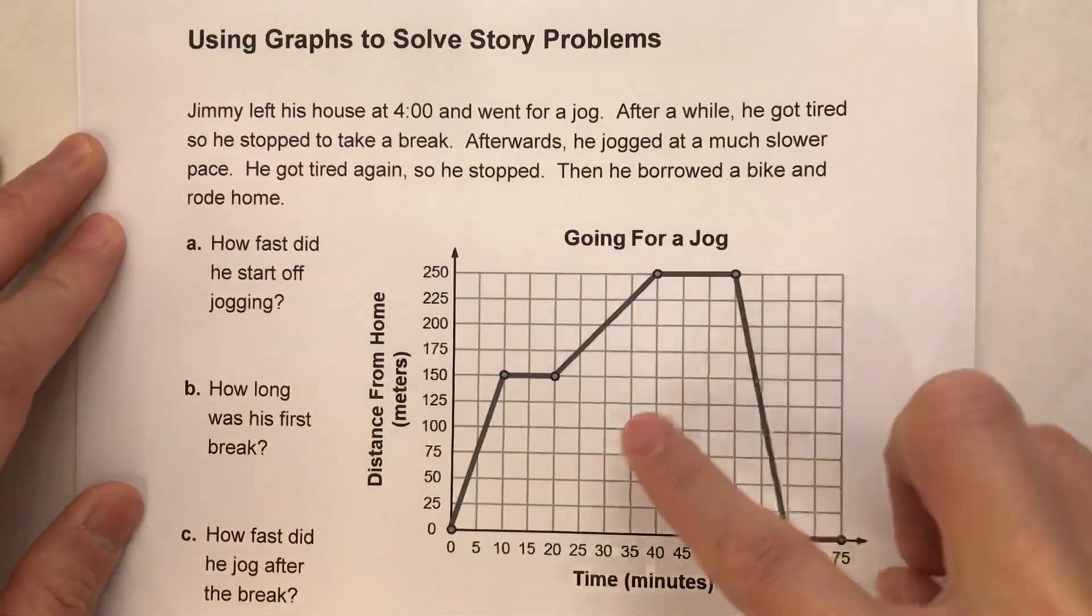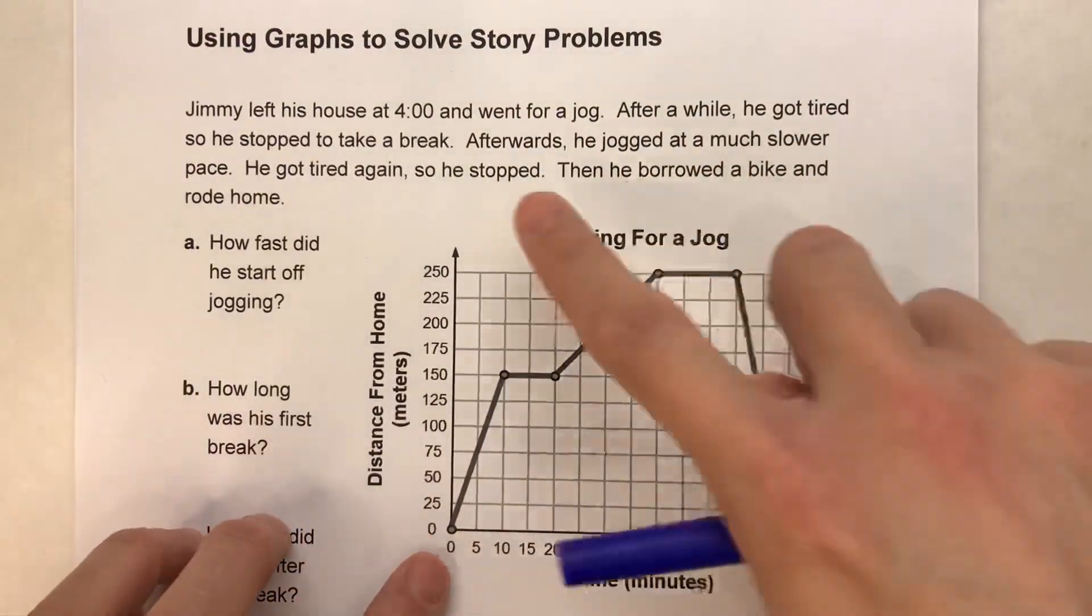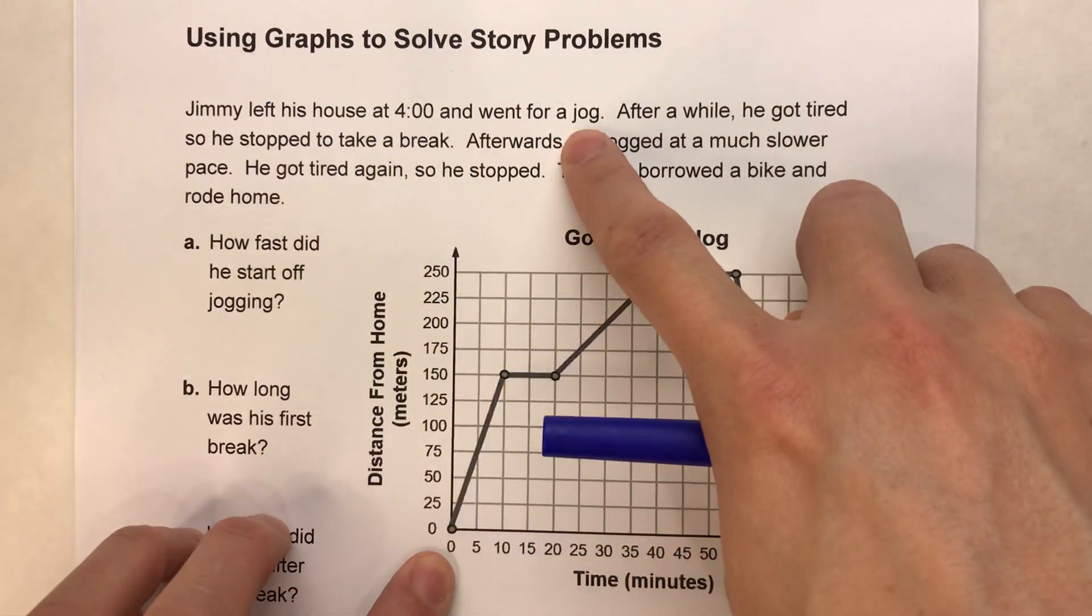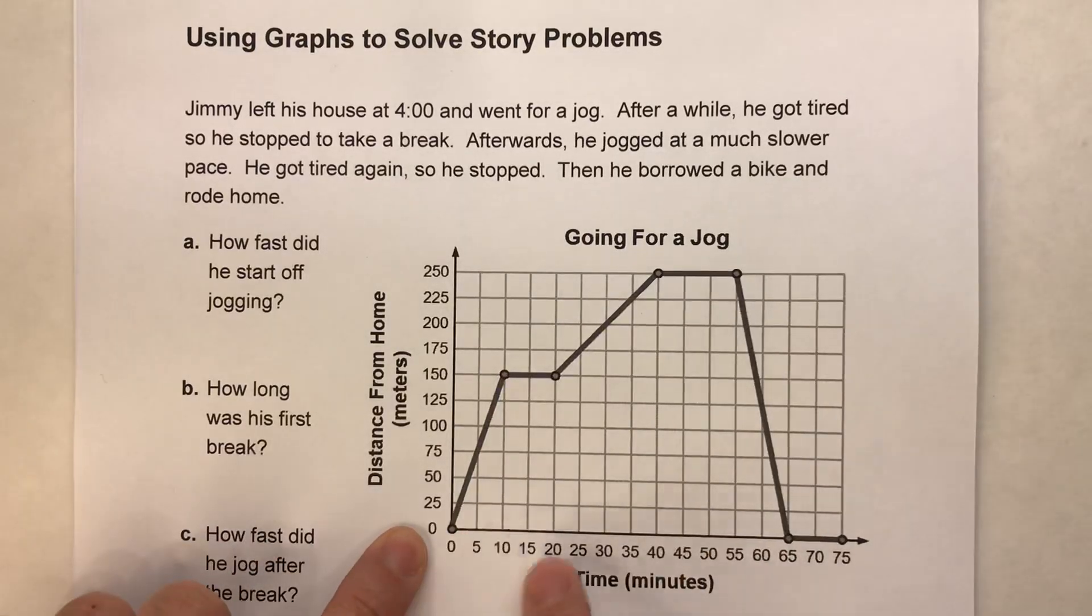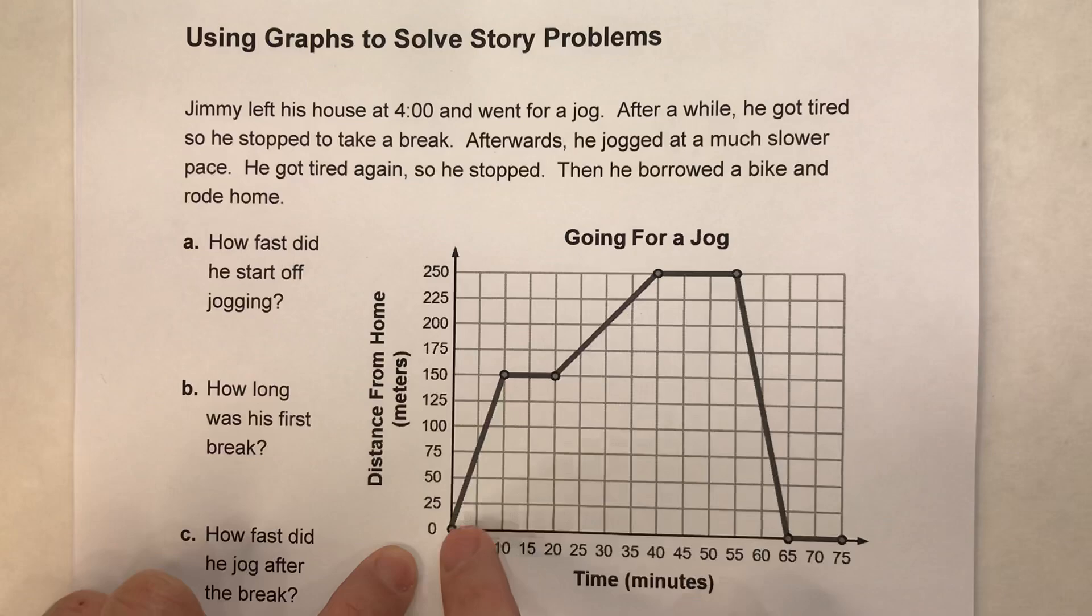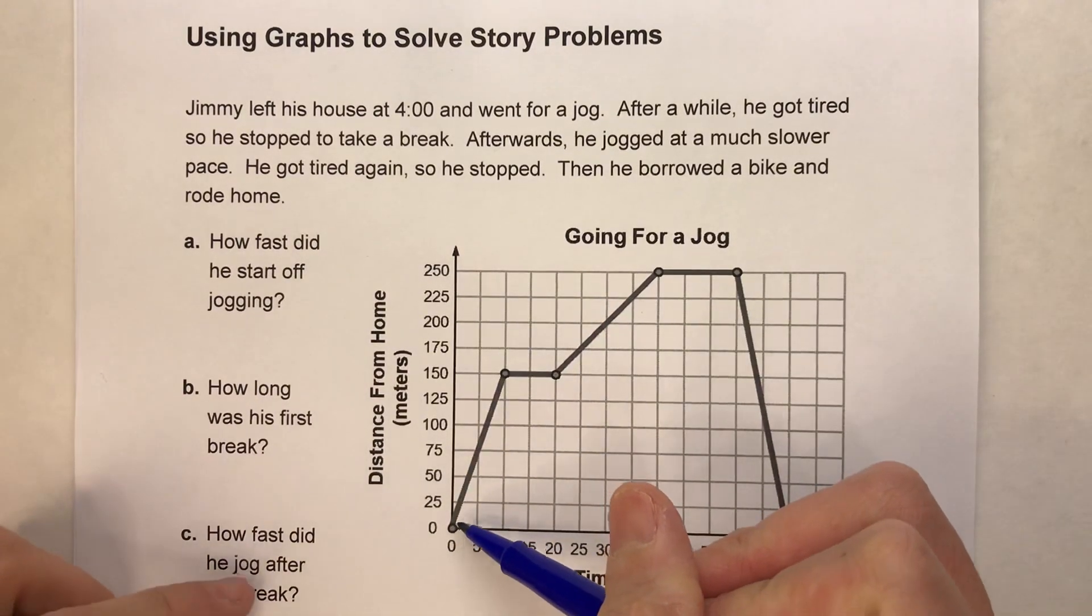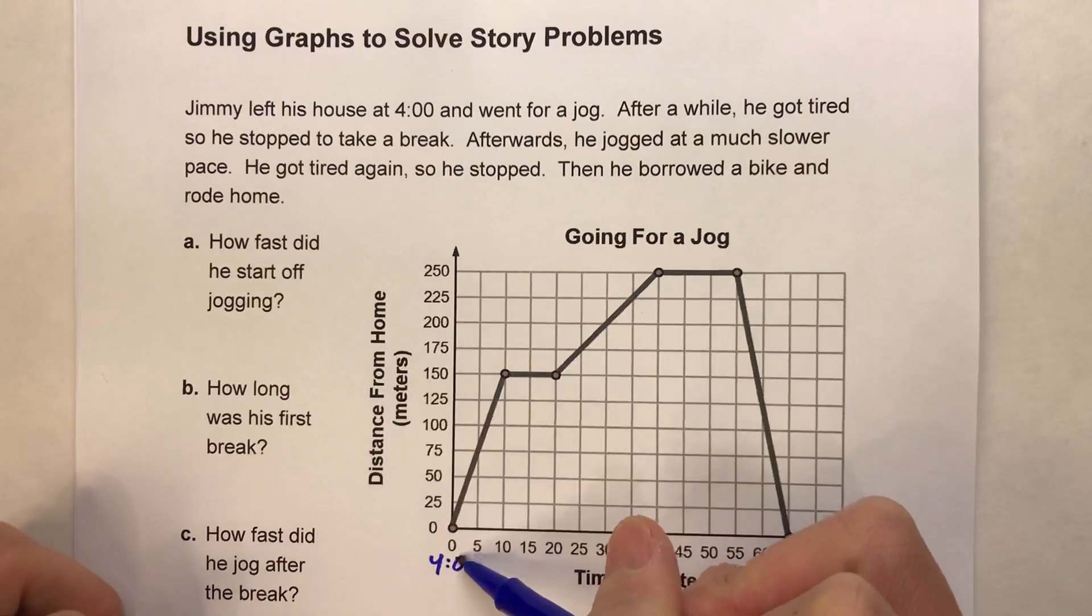Okay, so the first thing we have to do is take a look at this graph and figure out which parts are which. So it says Jimmy left his house at 4 o'clock and went for a jog. So if we've got time and distance from home, clearly this is where he started. So right here is where he left his house and this represents 4 o'clock.